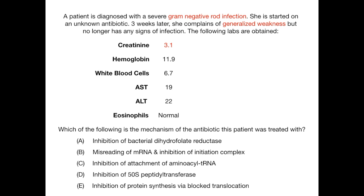In summary, we've got nephrotoxicity — because of the elevated creatinine — and a neuromuscular symptom, because the patient is complaining of generalized weakness. So we have a patient with a gram-negative rod infection started on an unknown antibiotic, and within three weeks, labs show kidney damage and a neuromuscular symptom. The question asks: what was the mechanism of this antibiotic?